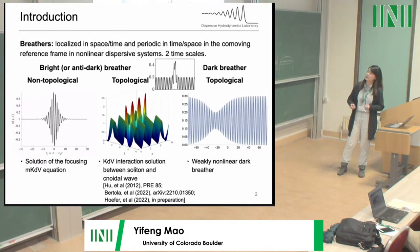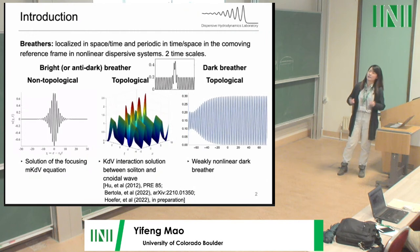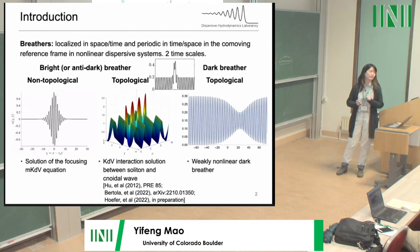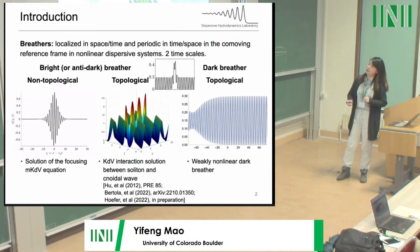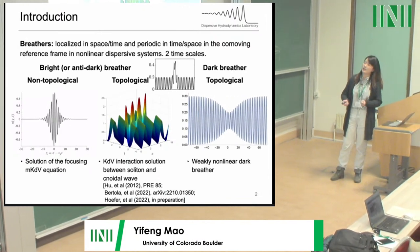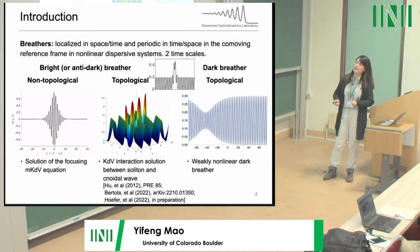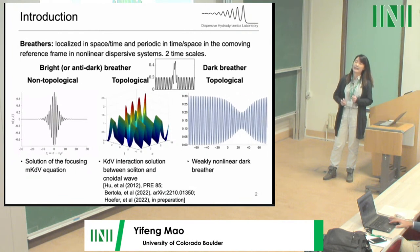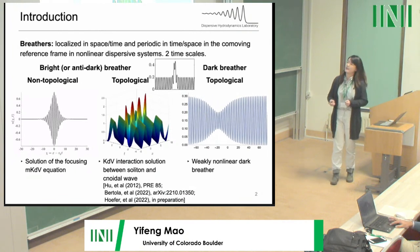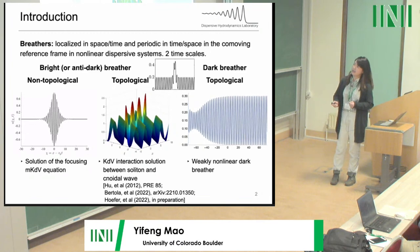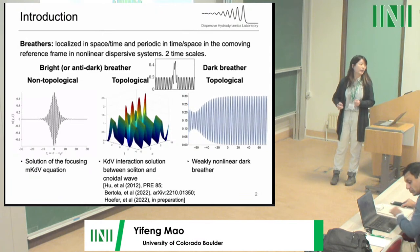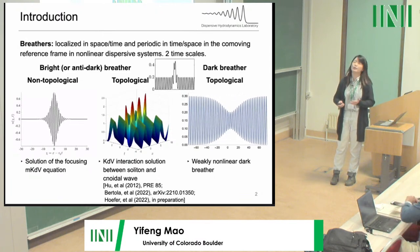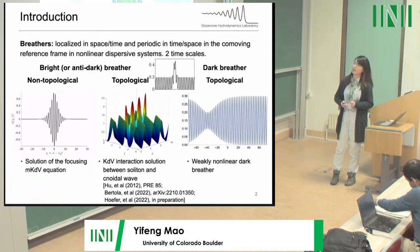In the comoving reference frame, you can see it is actually breathing. There are different types of breathers. The first example is the solution of the focusing mKdV equation. We see this structure has an elevation on top of a constant, trivial background. We call this type the non-topological bright breather.